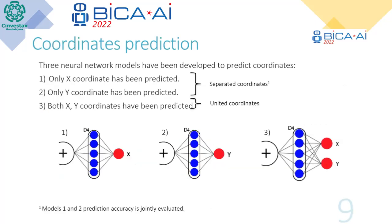Three neural network models have been developed to predict coordinates. The first model predicts only the X coordinate. The second model predicts only the Y coordinate. The third model predicts both X and Y coordinates together. The prediction accuracy of the first and second models is also jointly evaluated.